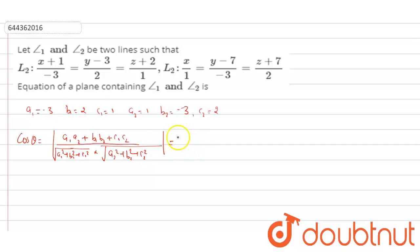From this, putting the value, cos theta is equal to mode of minus 3 into 1 plus 2 into minus 3 plus 2 into 1 upon square root of minus 3 square plus 2 square plus 1 square in the first case. And then, in the second case, that is 1 square plus minus 3 square plus 2 square.